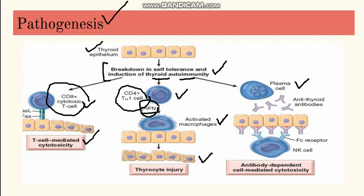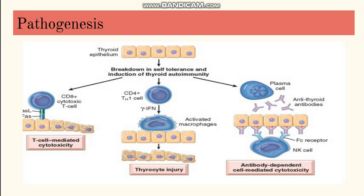Then there are plasma cells. Plasma cells produce antibodies, so here they produce various anti-thyroid antibodies, anti-TSH antibodies, and anti-thyroid peroxidase antibodies. These antibodies can further cause antibody-dependent cell-mediated cytotoxicity. This is all the reasons by which the thyroid epithelium is injured in Hashimoto's thyroiditis.